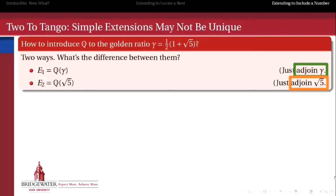But, you might say, gamma is made up of a sum of two numbers, one of which is irrational, but the other of which is rational.